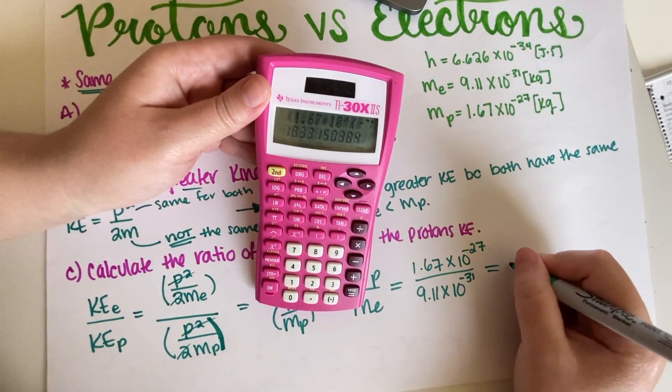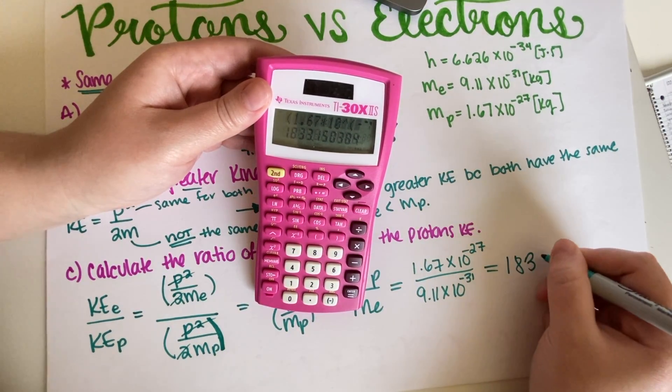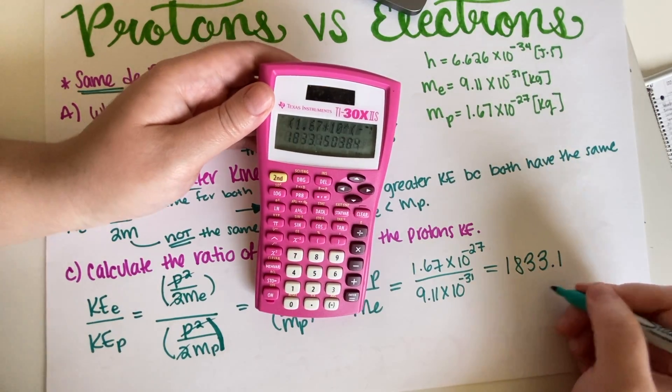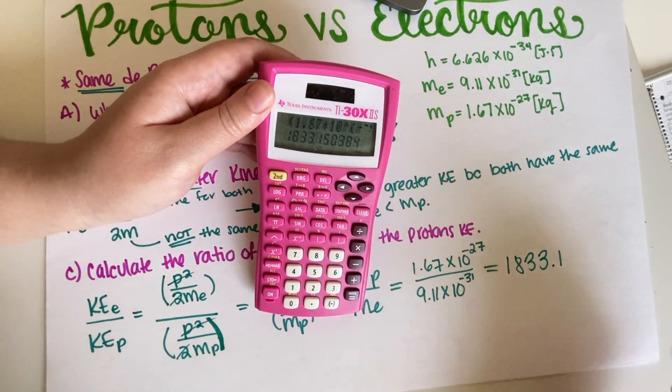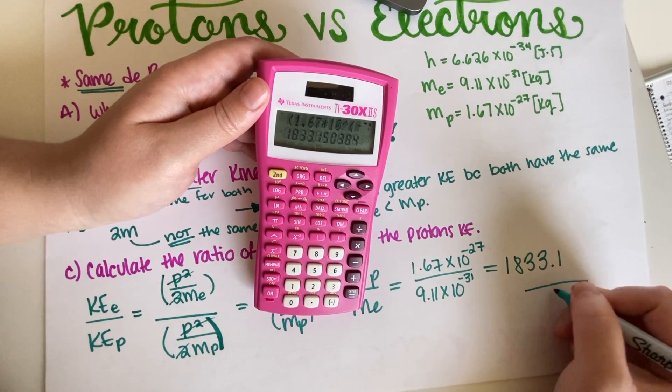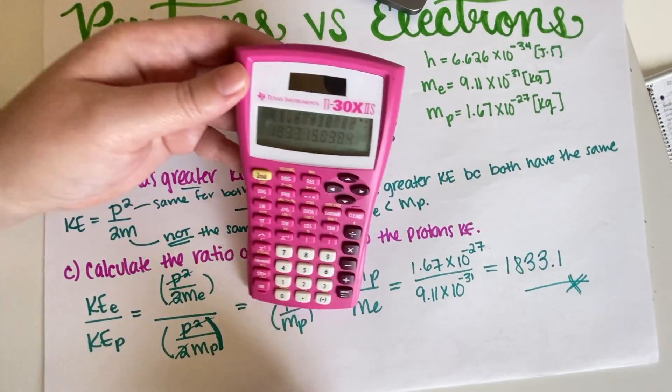So 1833.1, no units because kilograms divides kilograms so they cancel out. So final answer is 1833.1.